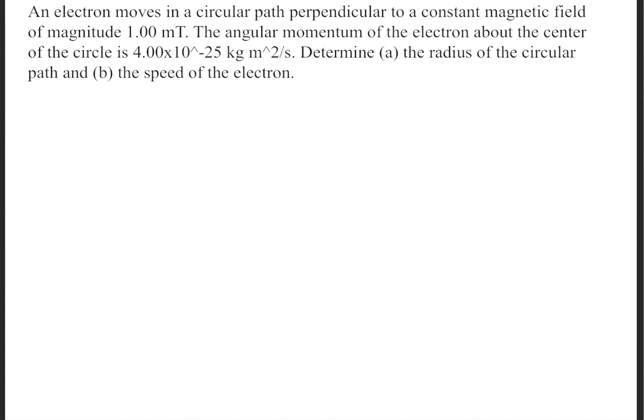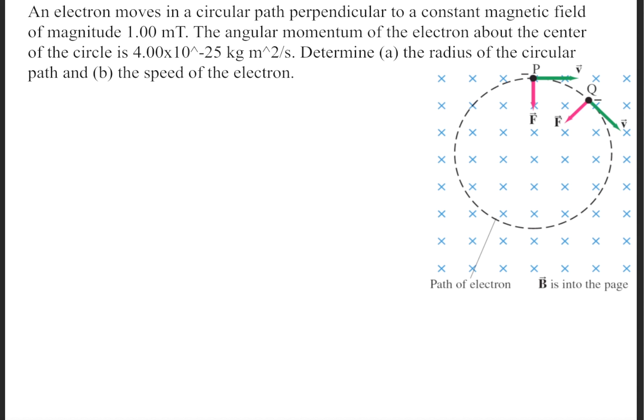So first we need to determine the radius of the electron's circular path. Now recall that as an electron is moving inside of a magnetic field, it will move in a circular path.